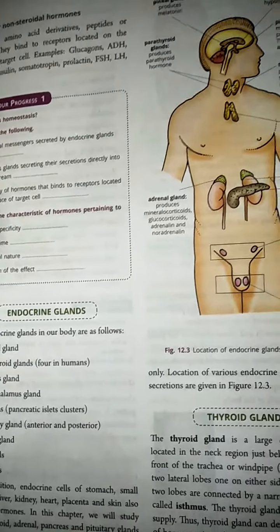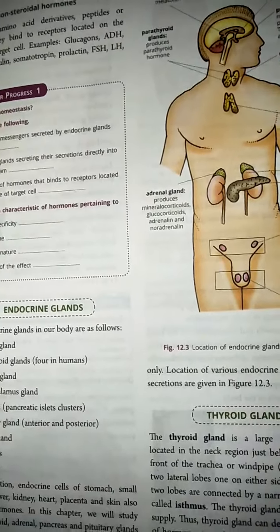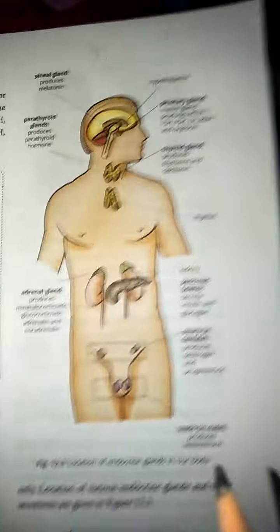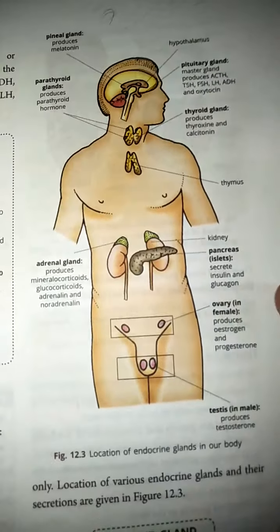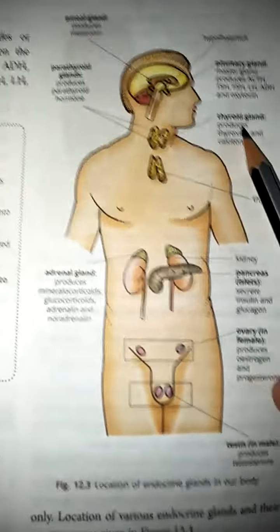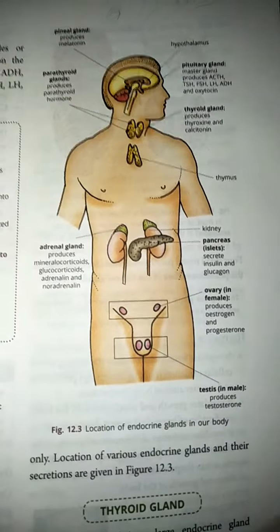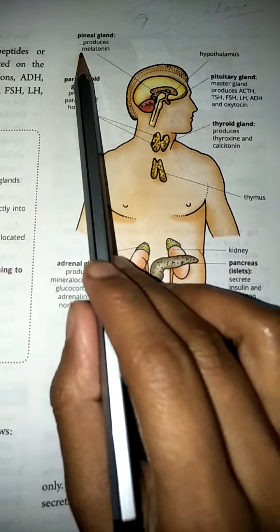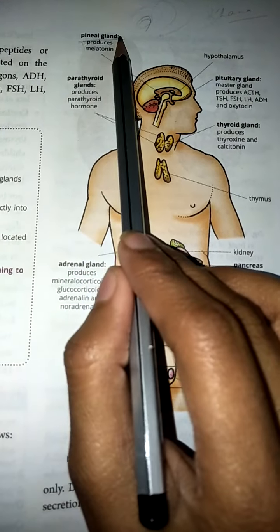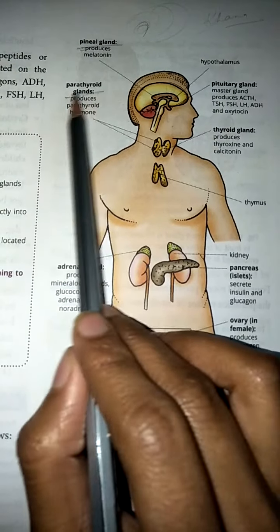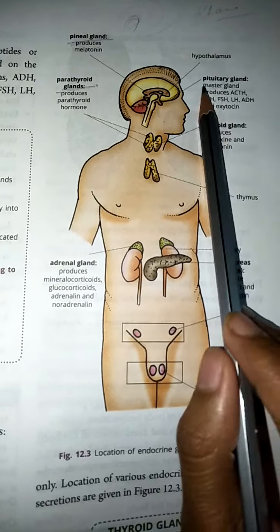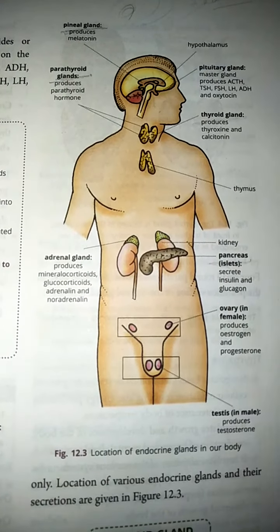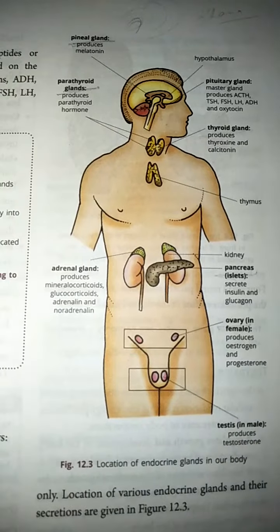Now let's start. Today we'll discuss endocrine glands. As you can see in this diagram, the different locations of different types of endocrine glands. First we will talk about the pineal gland, second the parathyroid glands, pituitary gland, thyroid gland, adrenal gland, pancreas, ovary in females, and testes in males.